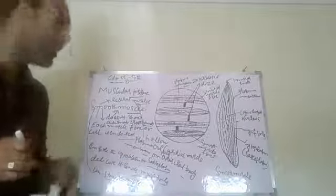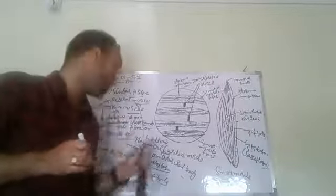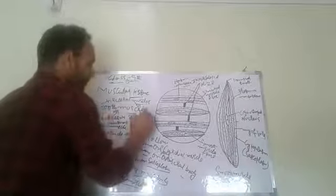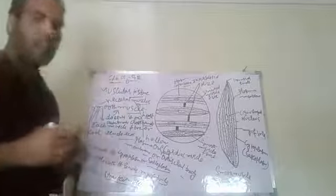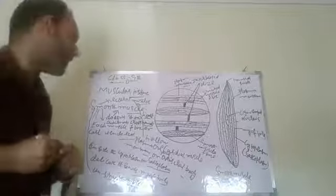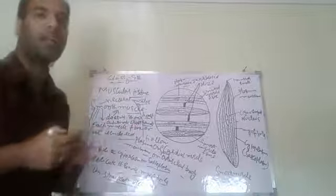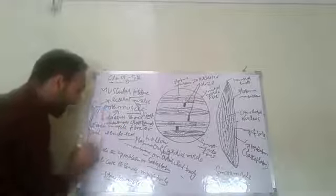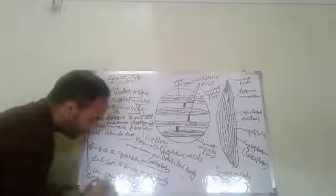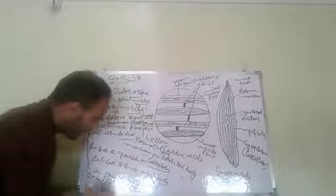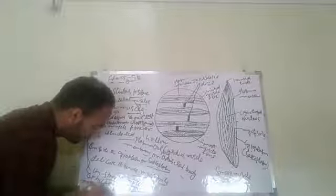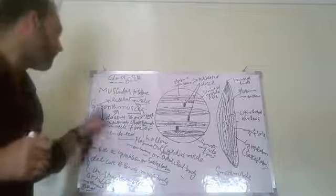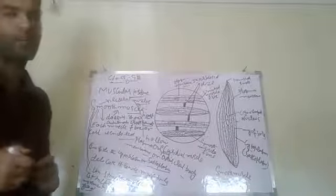The main function of smooth muscle: these muscles are present lining the internal hollow organs of the human body, except the heart. They are lining the cavities of the alimentary canal. The main important function of smooth muscle is that it helps in the movement of food through the alimentary canal.